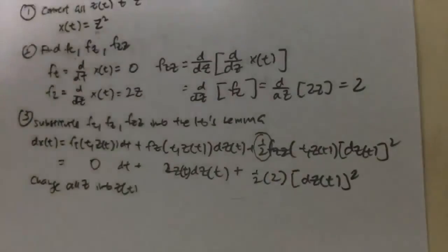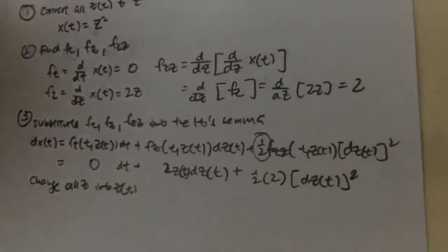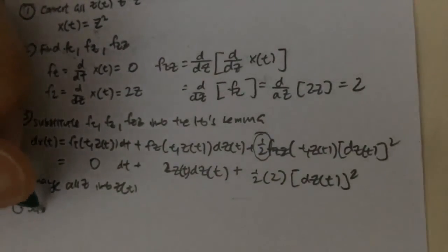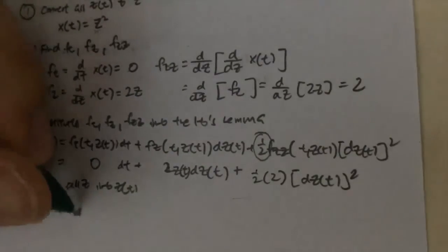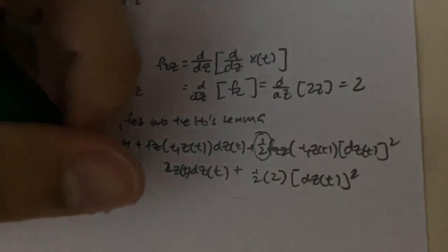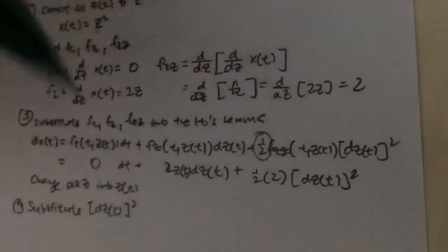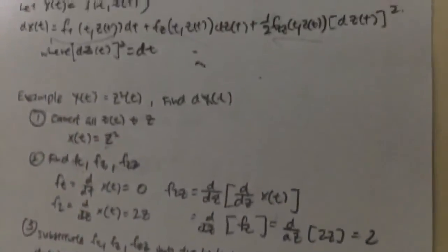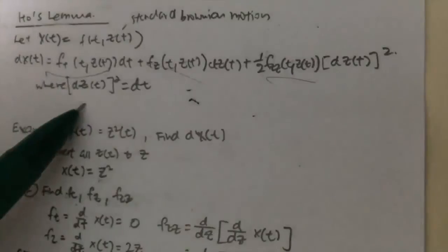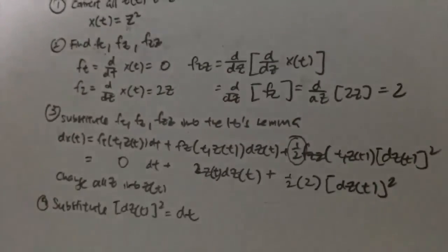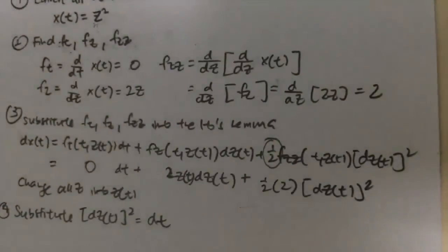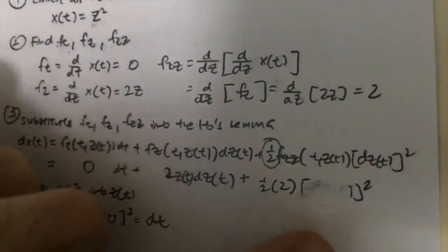And last but not least, we will substitute my dZ(t) squared equals to dt because this is actually given in the lemma where your dZ(t) squared is equals to dt. So in the end, dZ(t) squared would just become dt.